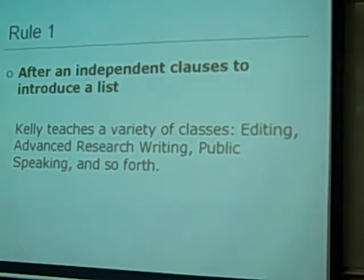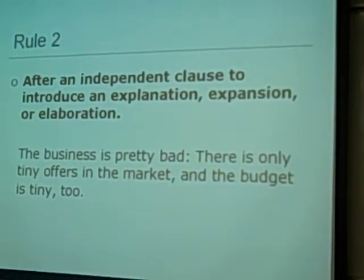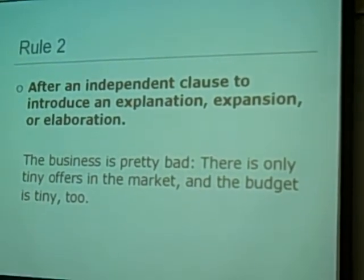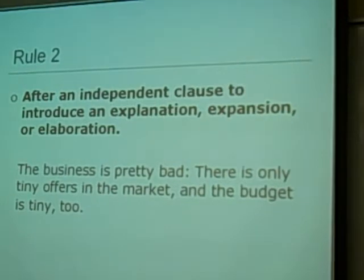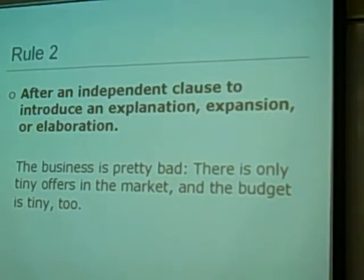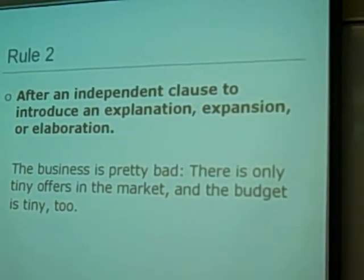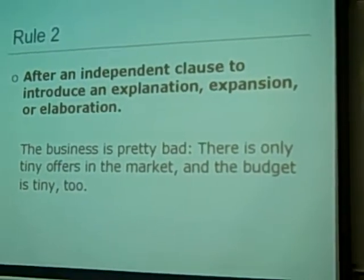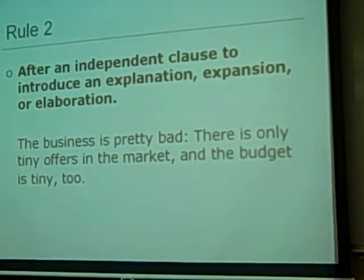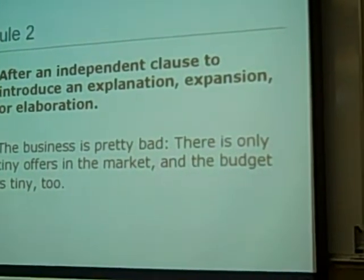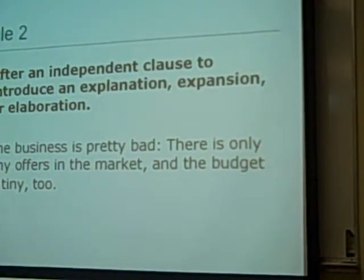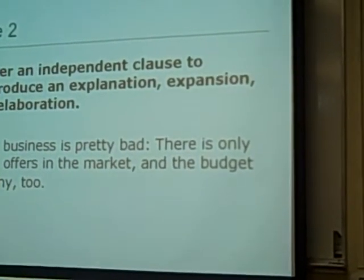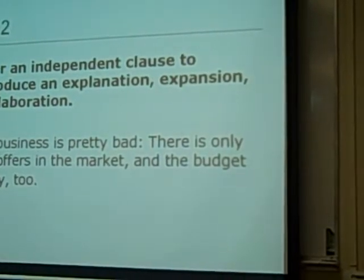The next rule is rule two, and I think this rule is complicated. I also cannot distinguish this rule from the semicolon rule because they are very similar. It is hard to distinguish between semicolon and colon in this rule. Rule two is: after an independent clause, to introduce an explanation, expansion, or elaboration.